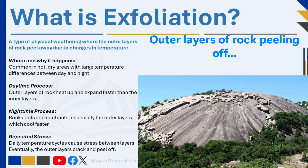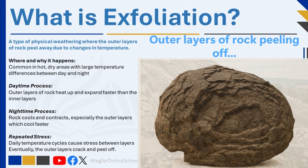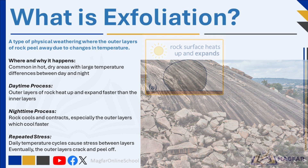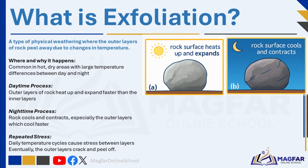Another important type of physical weathering is exfoliation, also known as onion skin weathering. Exfoliation is the process where the outer layers of rock slowly peel away due to changes in temperature and pressure. This typically occurs in hot, dry regions where there are large differences between daytime and nighttime temperatures. During the day, the outer layers of the rock heat up and expand more quickly than the inner layers.